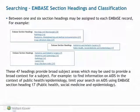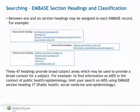Between one and six section headings may be assigned to each Embase record. These 47 headings provide broad subject areas which may be used to provide a broad context for a subject. These classifications are often used to provide a broad context for a search, but not all types of documents are classified.